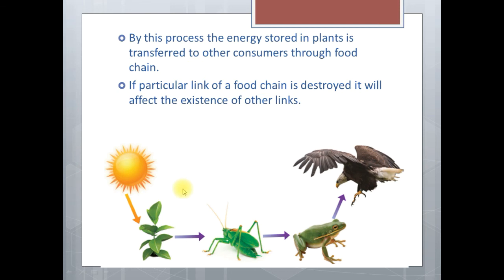If a particular link of a food chain is destroyed, it will affect the existence of other links. For example, let's say in this given food chain, the frog is completely destroyed. So what will happen? This eagle will not have enough food to fulfill their needs. At the same time, the number of grasshoppers will increase rapidly since they are not consumed by the frogs as they are destroyed.